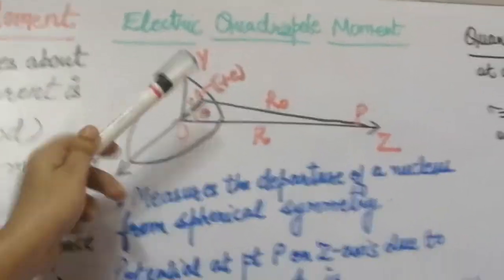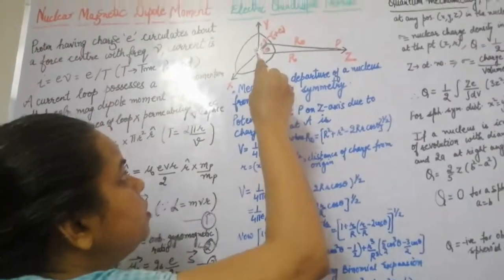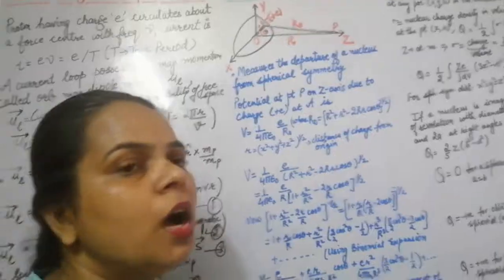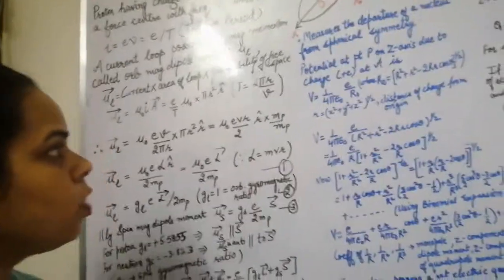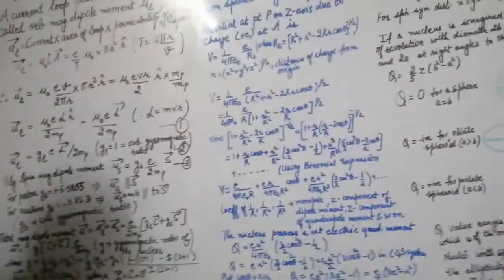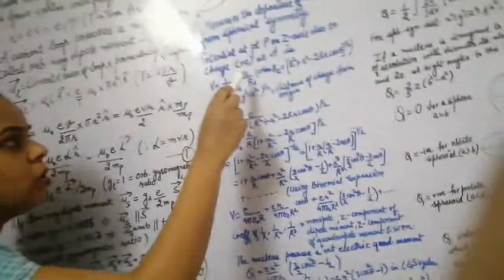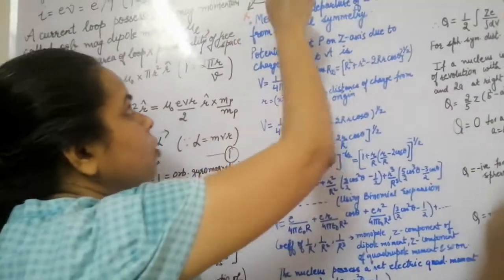Consider a proton (positive charge) placed in a three-coordinate system xyz at a distance r from origin O. We calculate the potential at point P on the z-axis. The distance from the proton to P is r₀, and from O to P is R. The potential at P due to the positive charge is V = (1/4πε₀) · e/r₀.